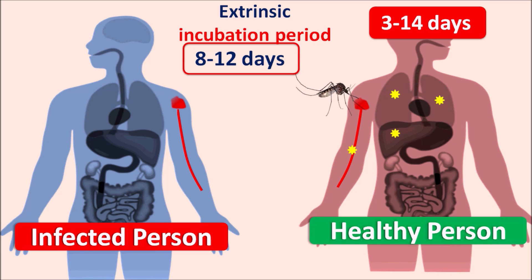We can find a significant amount of dengue virus in the infected person within 3 to 14 days. That is why diagnostic tests for dengue can identify the infection within 1 week, or sometimes after 1 week, from the onset of symptoms in the patients. Now let us see what the symptoms of dengue viral infection are.